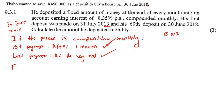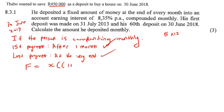Now we need to decide if it's a future value or a present value question. Thabo wanted to save — he wants to have 450,000 Rand in 2018. But he opened his account in 2013. So when he opened his account in 2013, was he wanting the money for the future? Yes — he opened his account in 2013 but only wanted the money in 2018. So he only wanted the money in the future. It's definitely a future value question, so we can write our future value formula down.